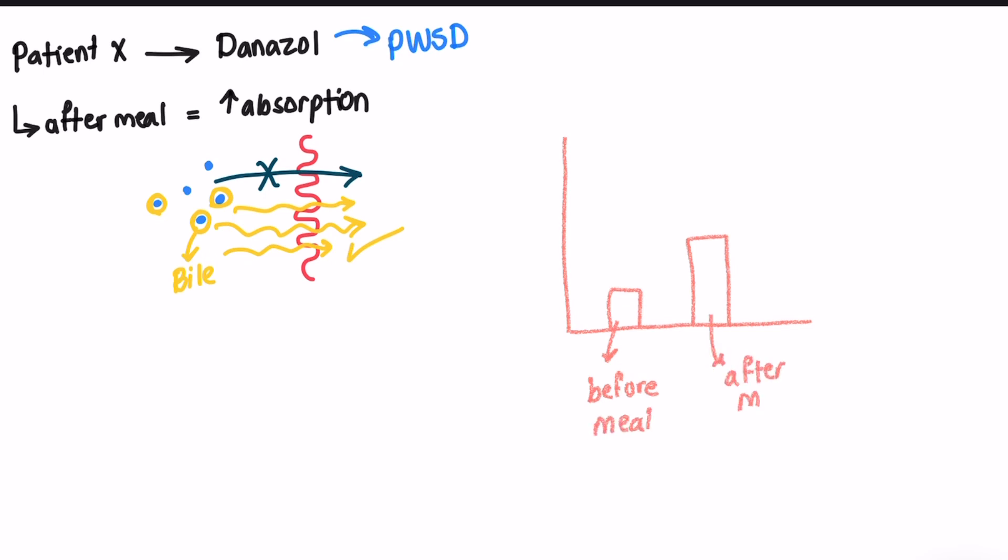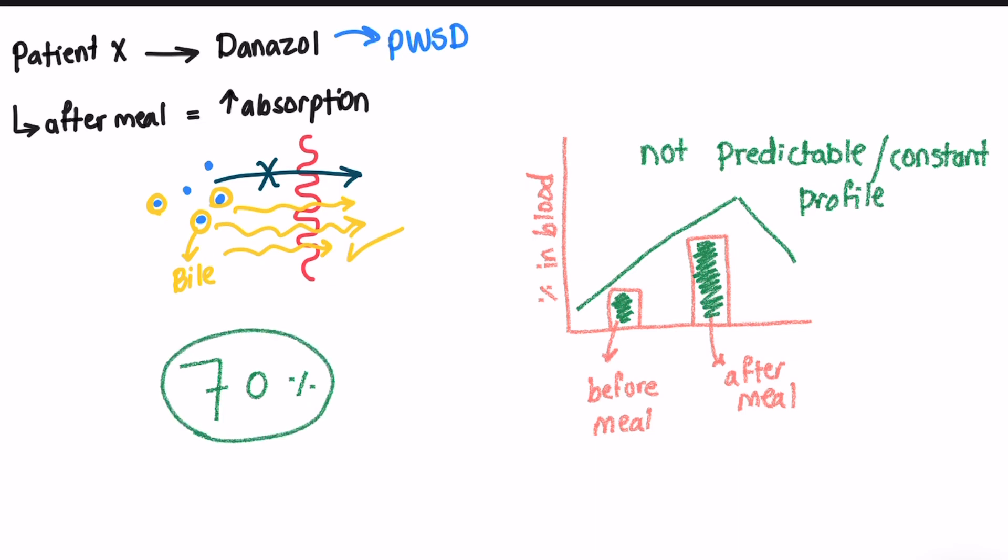This remains a huge problem because approximately 70% of the drugs in development are low-water-soluble drugs, or poorly water-soluble, and they have low dissolution rate, and therefore low bioavailability. So what could we do to manage this issue?